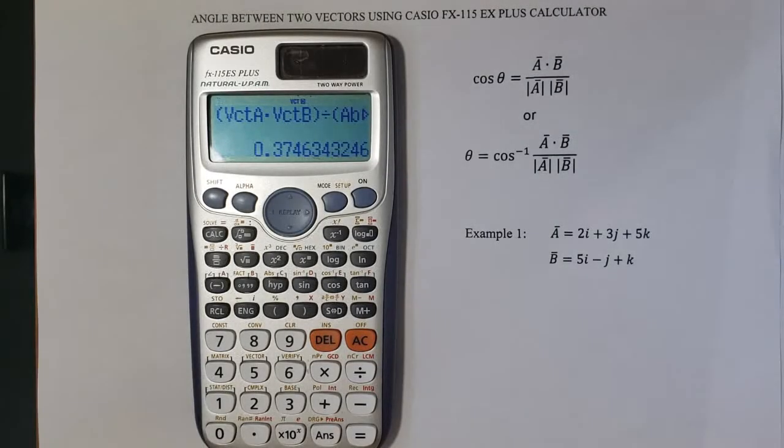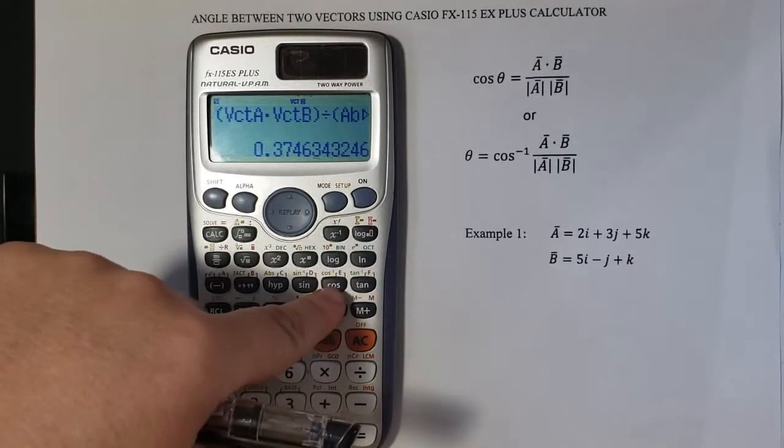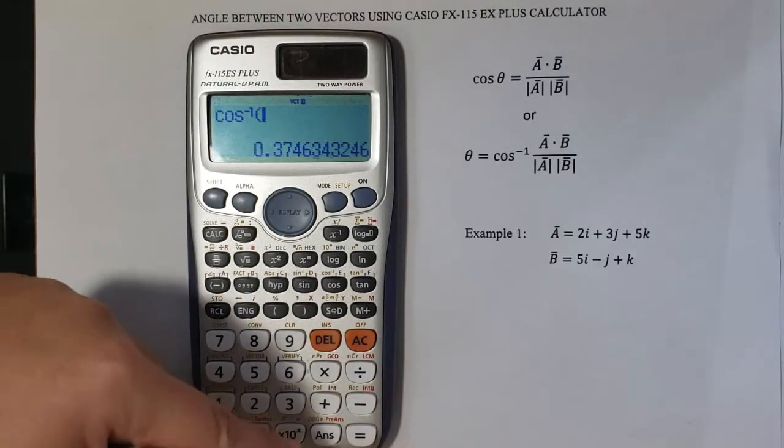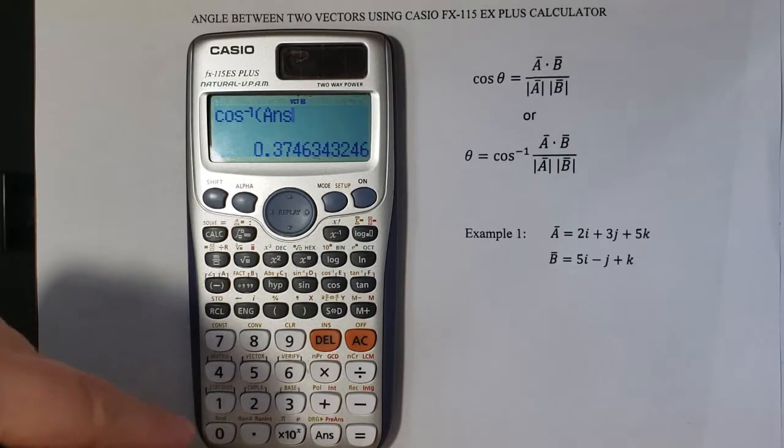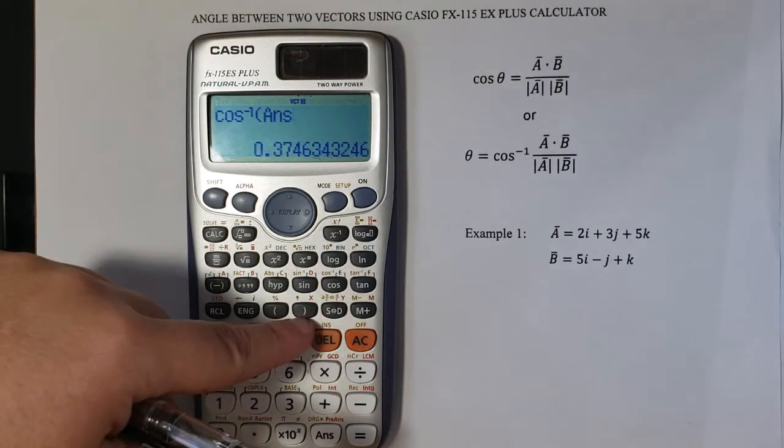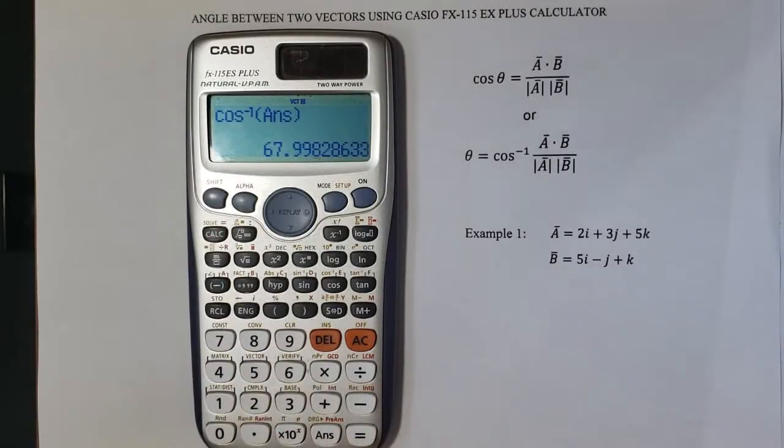we simply need the inverse of the cosine. SHIFT. I will press this button, cosine here. And then now I will press this answer memory key here. This button, this memory, helps the result of a calculation after the equals key. Close the parenthesis and then equal 67.99.